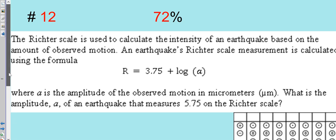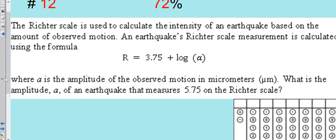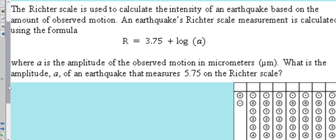Calculate the intensity of an earthquake based on the amount of observed motion. An earthquake's Richter scale measurement is calculated using the formula given there, where A is the amplitude of the observed motion in micrometers. What is the amplitude A of the earthquake that measured 5.75 on the Richter scale?